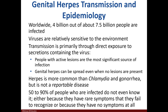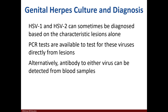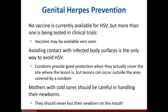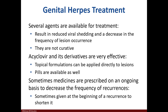Four billion people are infected with herpes worldwide, and the viruses are transmitted via direct contact or vertically. Up to 90% of people may experience symptoms they don't notice or are asymptomatic. Herpes can be diagnosed by the lesions, PCR, or antibody testing. Avoiding contact is a preventative measure. Treatment includes acyclovir and derivatives, and sometimes patients may take medicine to shorten a recurrence.